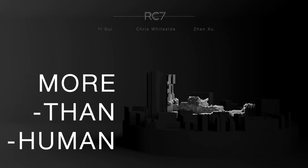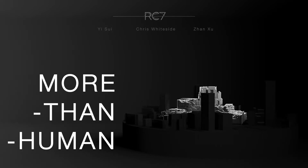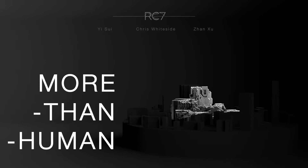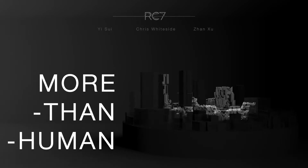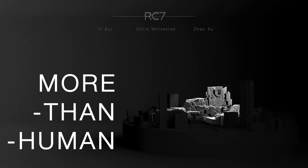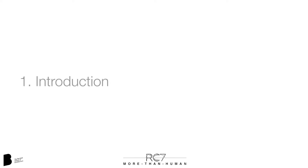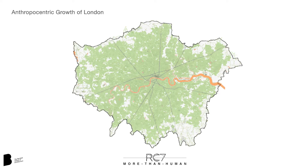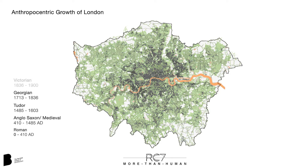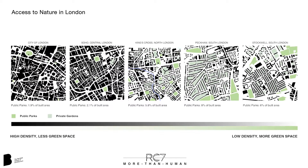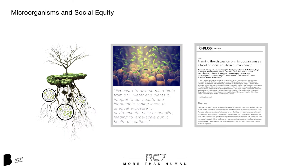More Than Human. Our project furthers the research agenda of RC7, exploring the integration of non-human agency within architecture, in the face of accelerating environmental collapse. Globally, and in cities such as London, anthropocentric growth continues to come at the expense of the non-human world. Access to nature is increasingly limited and unfairly distributed, and for those who live without it, studies show there can be detrimental physical and mental health effects.